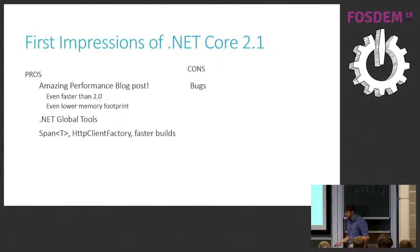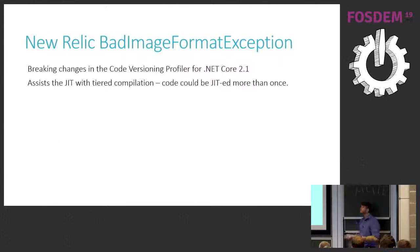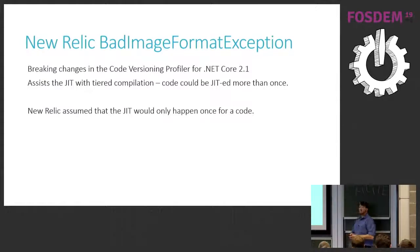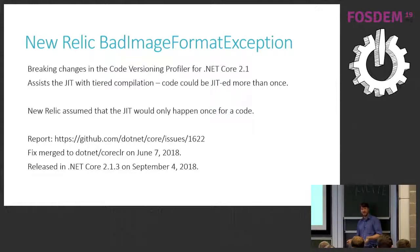We ran into a lot of problems with .NET Core 2.1. First: the New Relic bad image format exception. There was a breaking change in the way the code versioning profiler worked in .NET Core 2.1. New Relic assumed the JIT would only happen once for a given piece of code — true forever until .NET Core 2.1. With .NET Core 2.1 that was no longer true, so we'd get errors and the service just didn't boot. The great thing about open source is we could see the bug report, the fix, and when it was released — a couple months later.